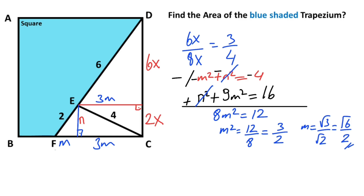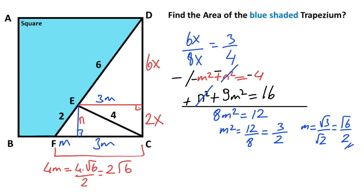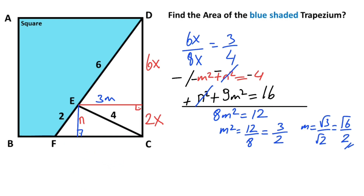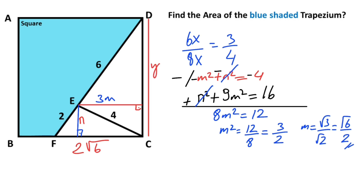Let's write here: 4m equals 4 times root 6 over 2, which gives us 2 root 6. Let's write 2 root 6 here. And let's call the remaining length y.